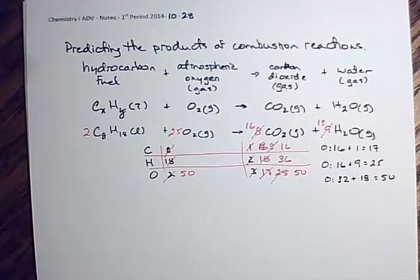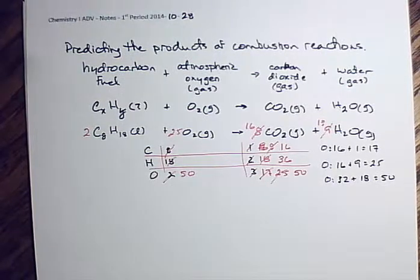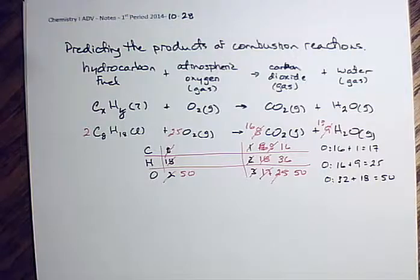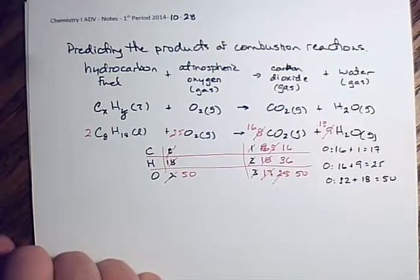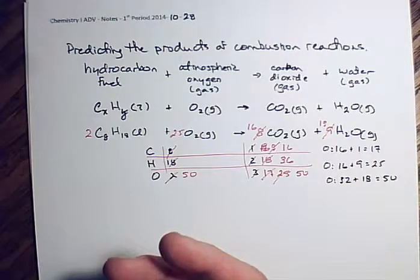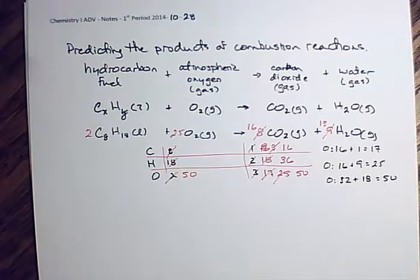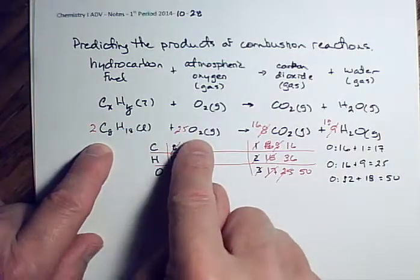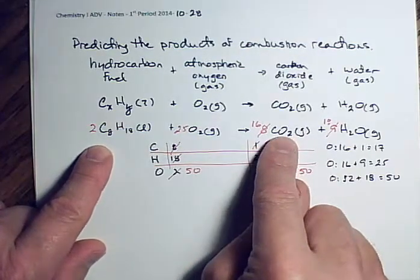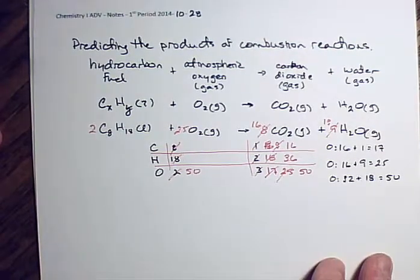Combustion reactions are the easiest to predict products for. Hydrocarbon plus oxygen always gives CO₂ and water. In addition to these chemical products, combustion also makes light and heat. Please don't forget: that's the easiest one to predict products for.